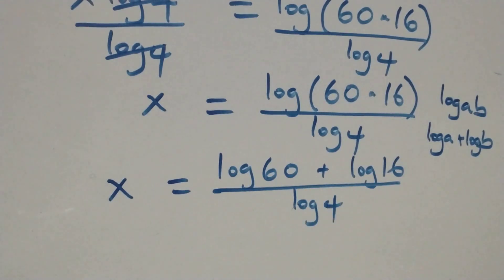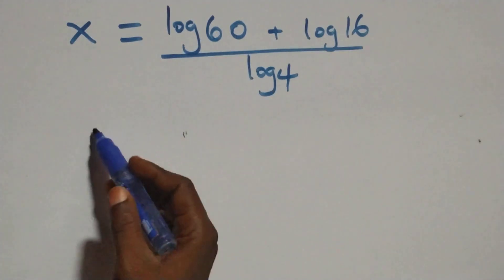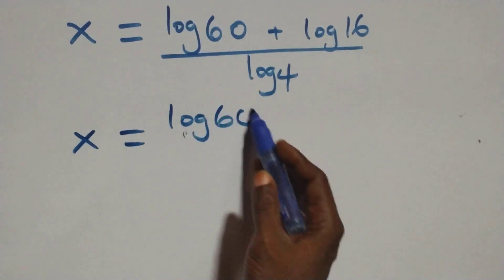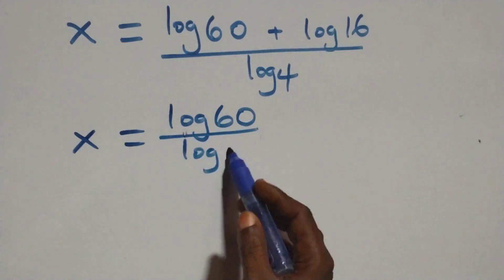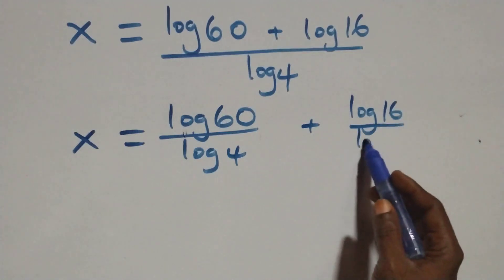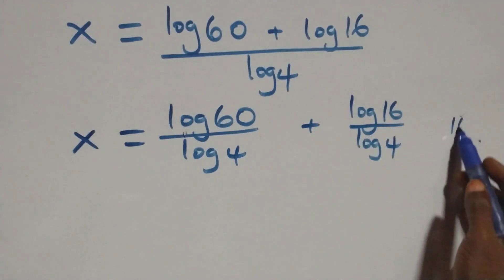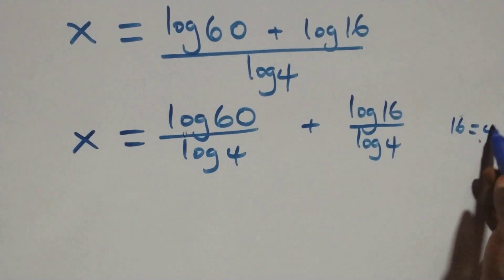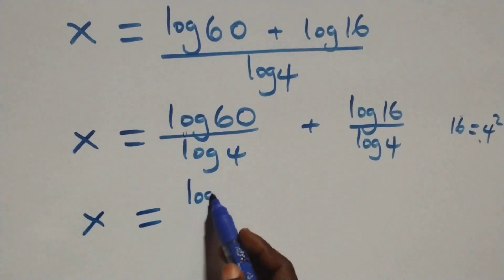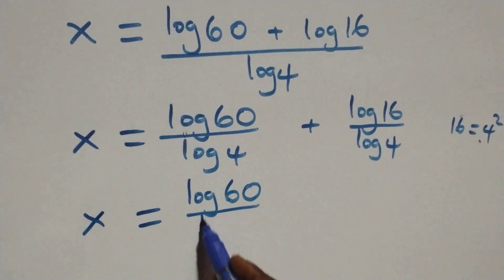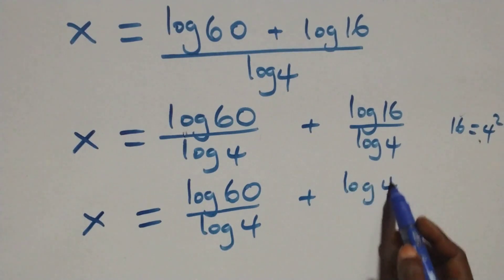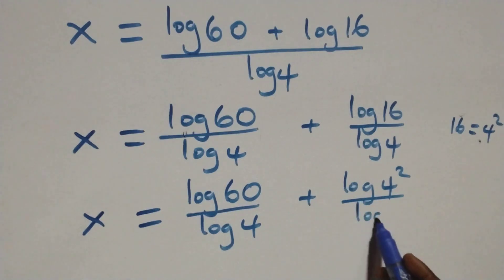That gives us x equals log sixteen over log four plus log sixteen over log four. Then here we can write sixteen as four times four, that is four squared. What we have here becomes x equals log sixteen over log four plus log four squared over log four.